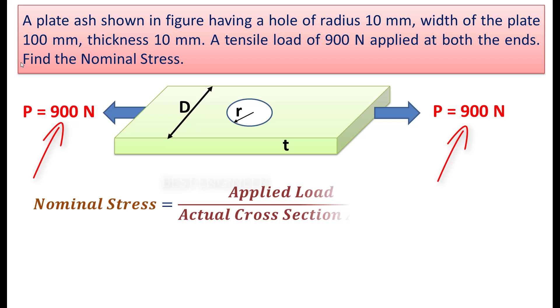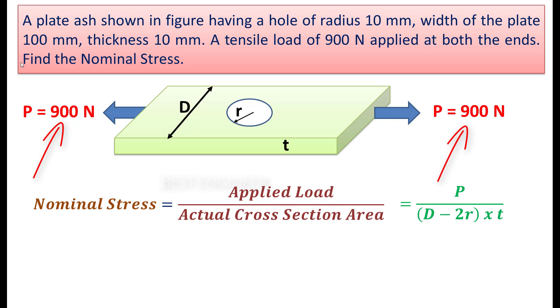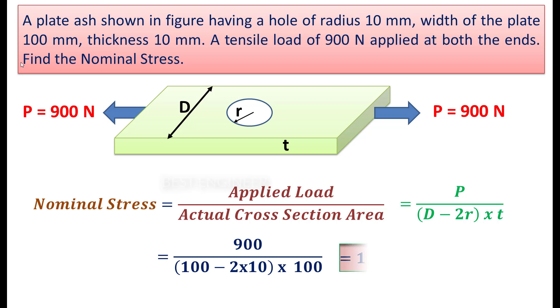This is the formula. The load is 900 N divided by active cross-section area by subtracting the hole area. The nominal stress is 11.25 MPa.